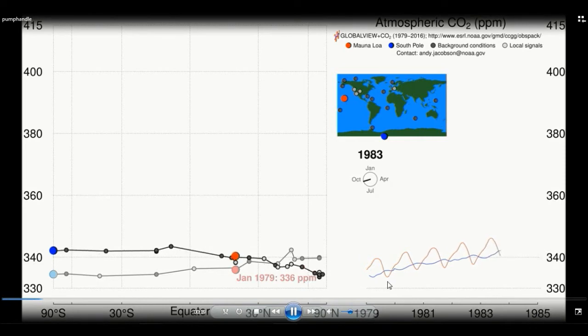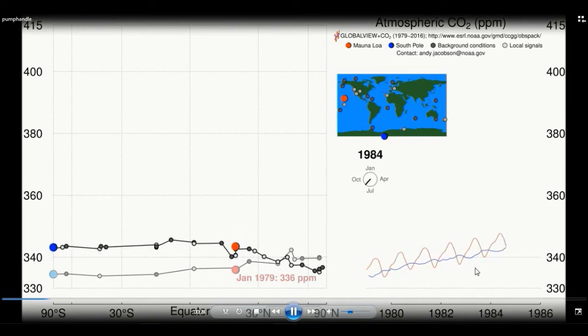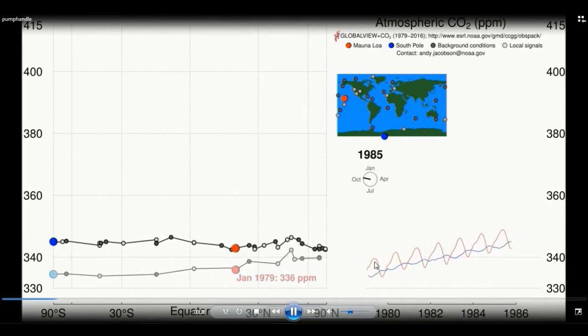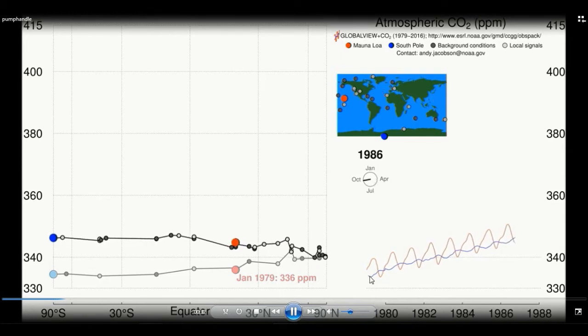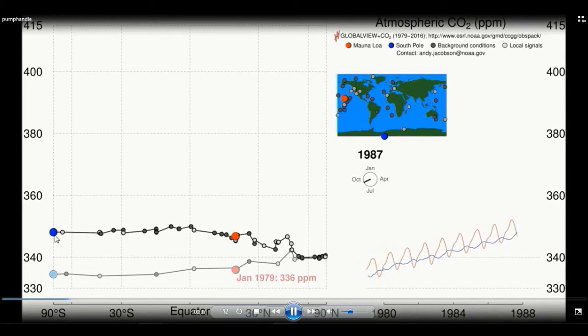Here you can see the carbon dioxide concentrations being plotted out over time. The red line here is represented by the measurements made at the Mauna Loa site here. And then the blue line here is represented by measurements made at the South Pole here.